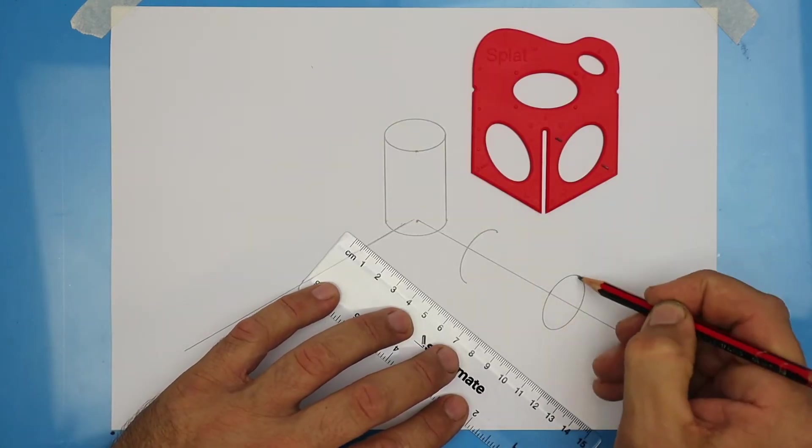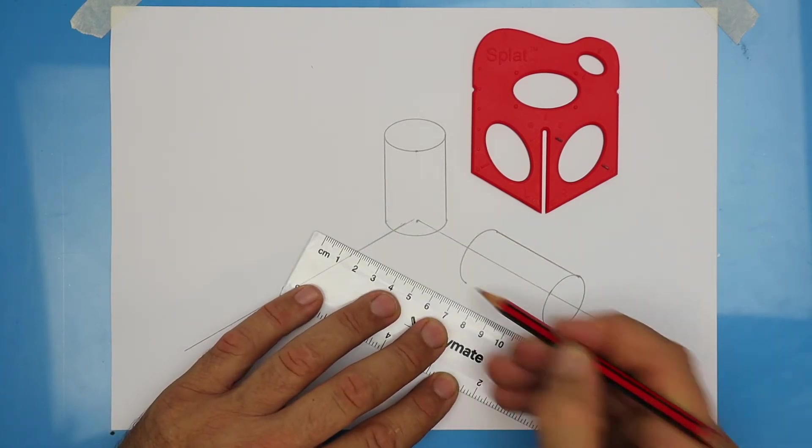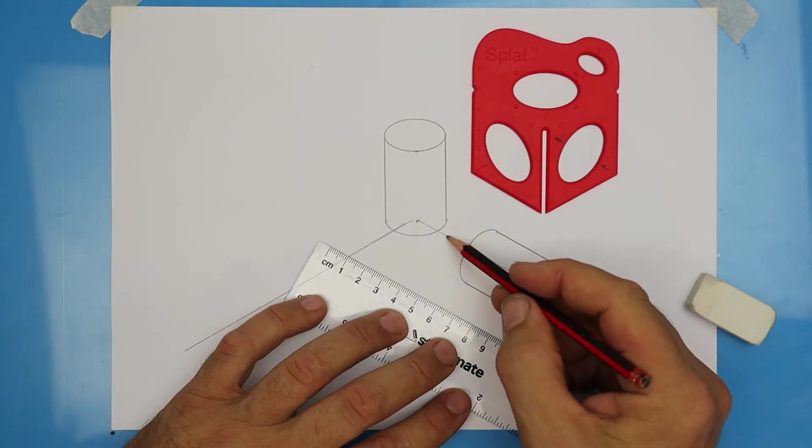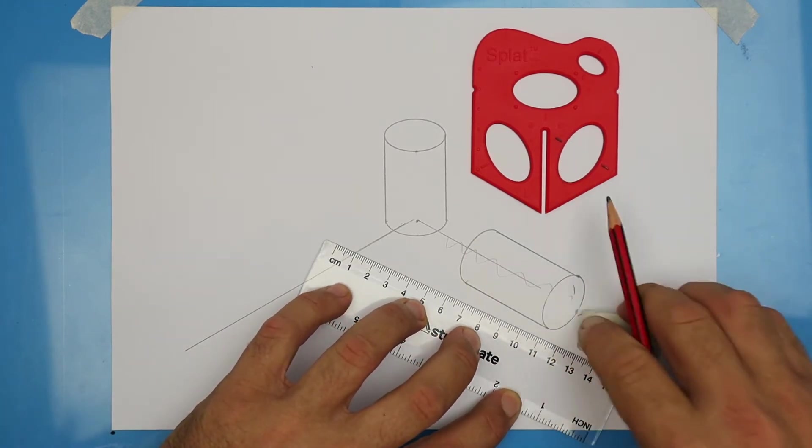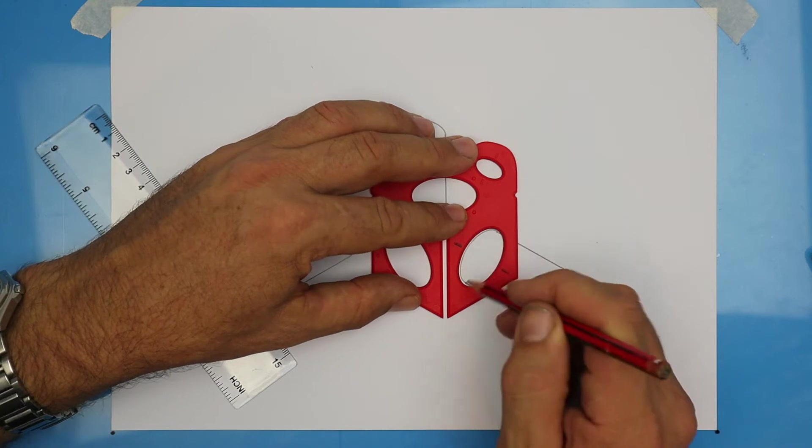Here I'm using a ruler to join the tops of the ellipses. On 3D type drawings, we usually remove the centre lines. Here I'm redrawing just the little parts that I've erased.